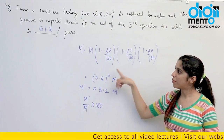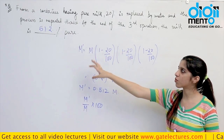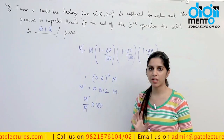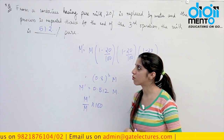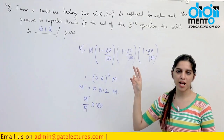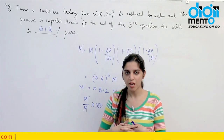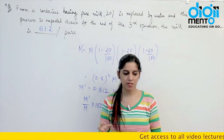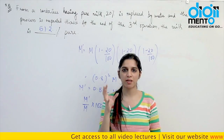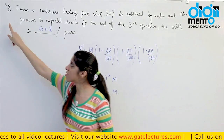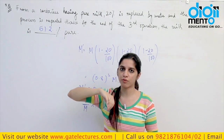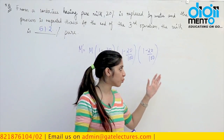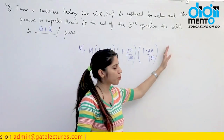You can also solve this by considering an initial value of 1000 grams — each time subtract 20%, leaving 800, then 640, then 512. You get the same answer. I recommend using the formula shortcut as it is faster. These kinds of questions — mixing the concept of mixtures and allegations with percentages — are asked very frequently. Examiners love questions that mix two or three concepts, so pay special attention to them.